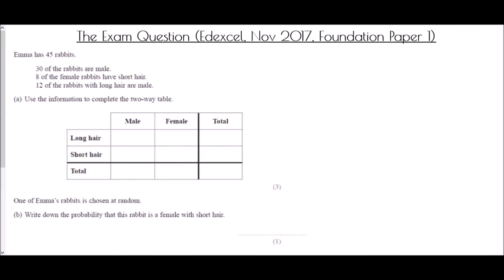Finally, we come to our exam question from the EdExcel paper, November 2017, Foundation Paper 1. Emma has 45 rabbits. 30 of the rabbits are male. 8 of the female rabbits have short hair. 12 of the rabbits with long hair are male. Use the information to complete the two-way table. We look at each line of information: Emma has 45 rabbits — that is the total total, so 45 goes in there. 30 of the rabbits are male, so the male total must be 30. 8 of the female rabbits have short hair, so in the female section, 8 goes in the short hair box. And 12 of the rabbits with long hair are male, so 12 goes in the male long hair box.